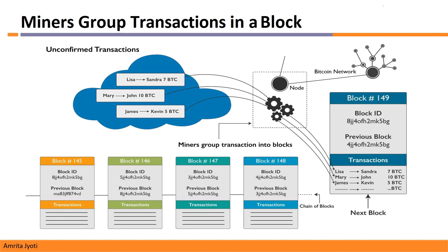This is a very important diagram to understand the concept of transactions in the blockchain. In the cloud you can see many unconfirmed transactions — these are new transactions that have not yet been added to the blockchain. These are transactions that different nodes in the blockchain network have created. The miner's role here is to pick these transactions, verify them, and after verification, add them into one block.